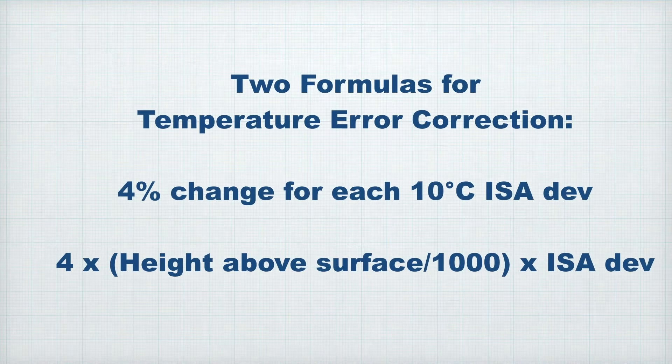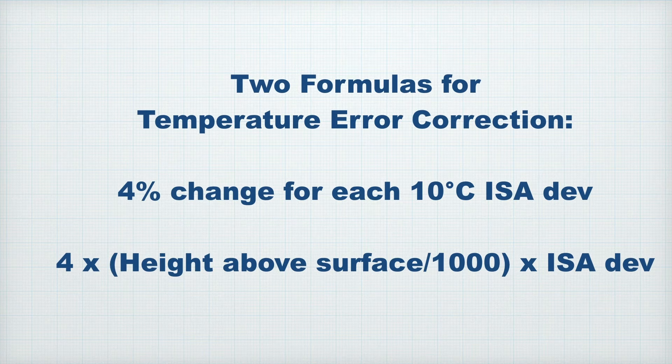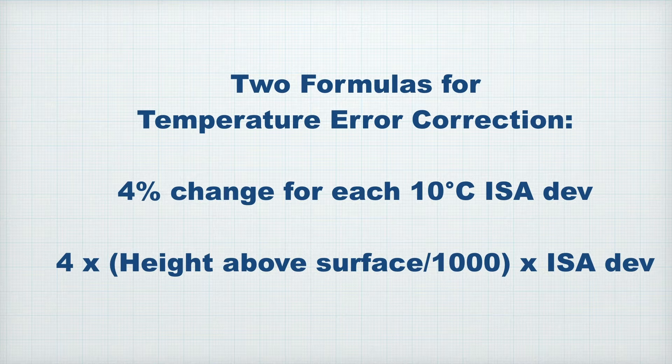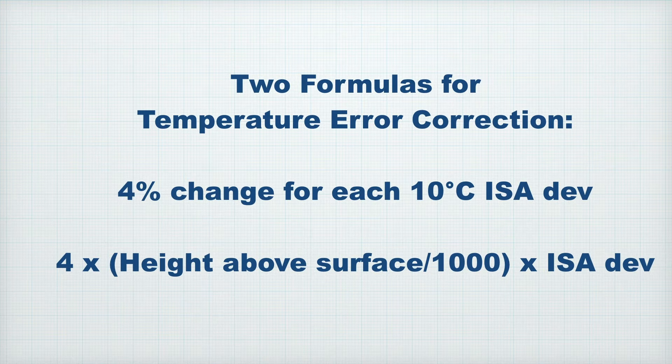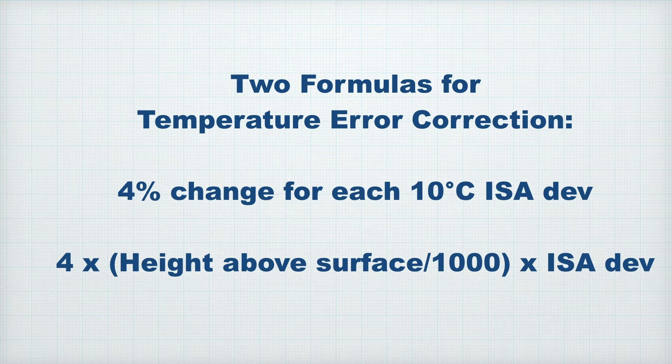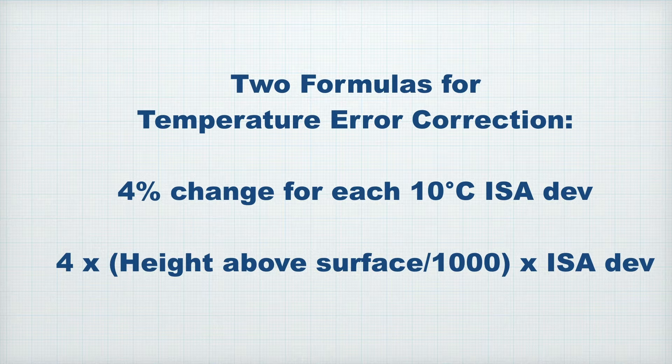As a general rule, the altitude changes by 4% for every 10 degrees of deviation from ISA. Another way of putting that is that the altimeter will show an error of 4 feet for every 1 degree Celsius ISA deviation per 1000 feet. And we do this temperature correction for the column of air that is between the aircraft's indicated altitude and the surface it is flying over.